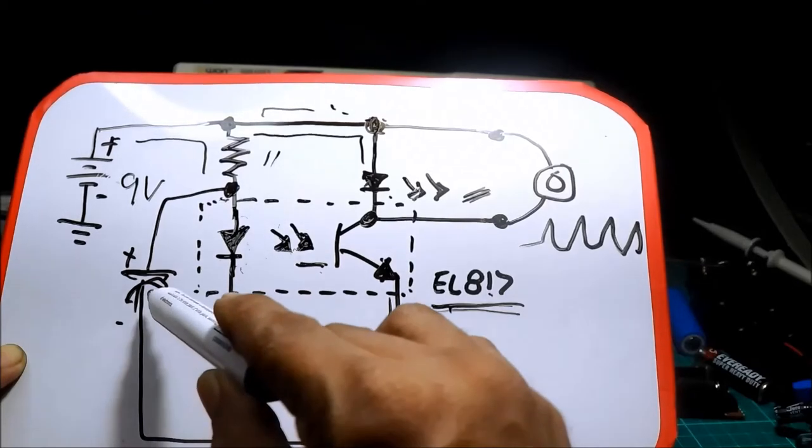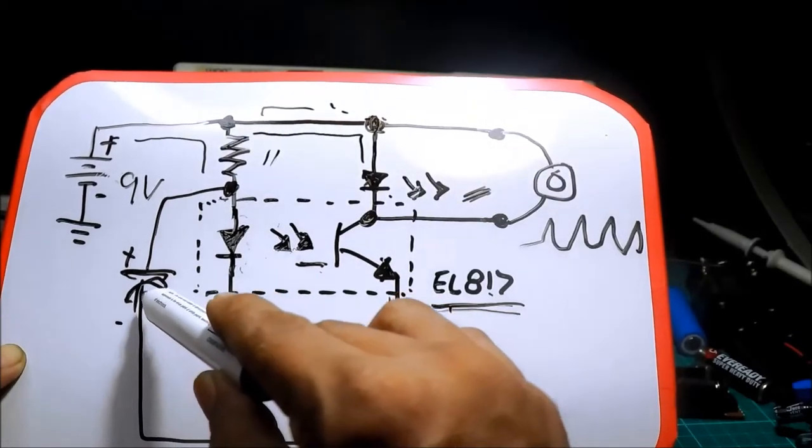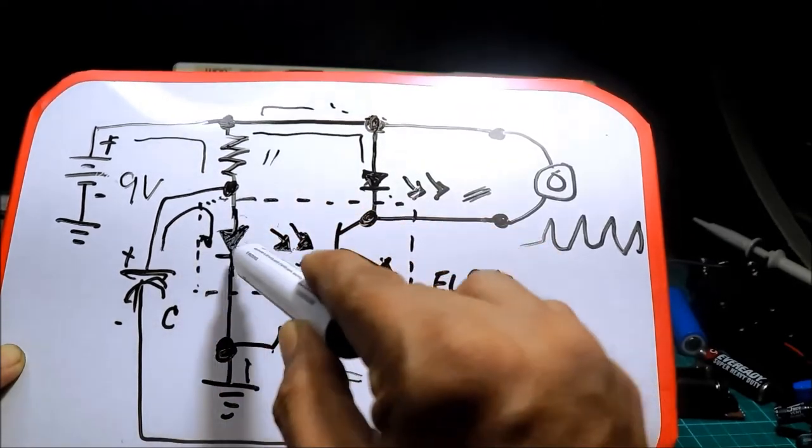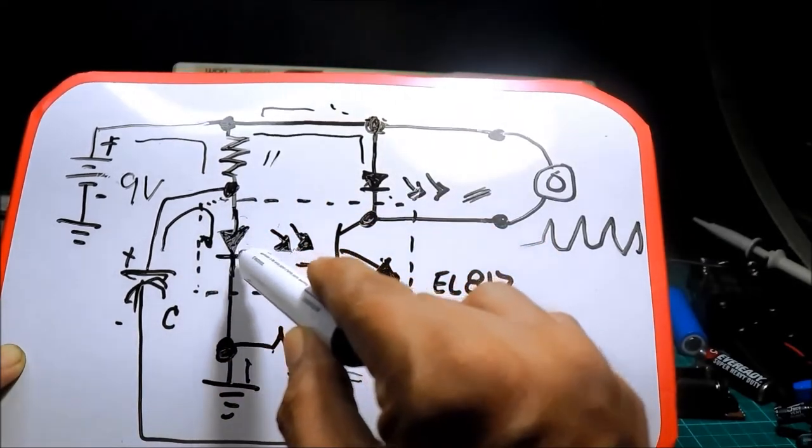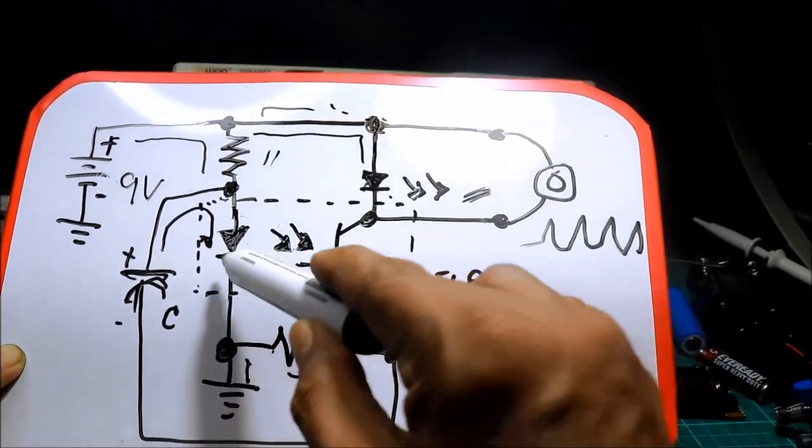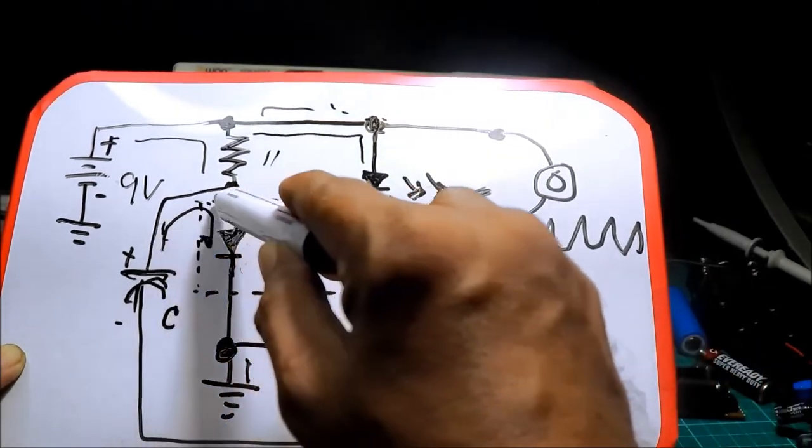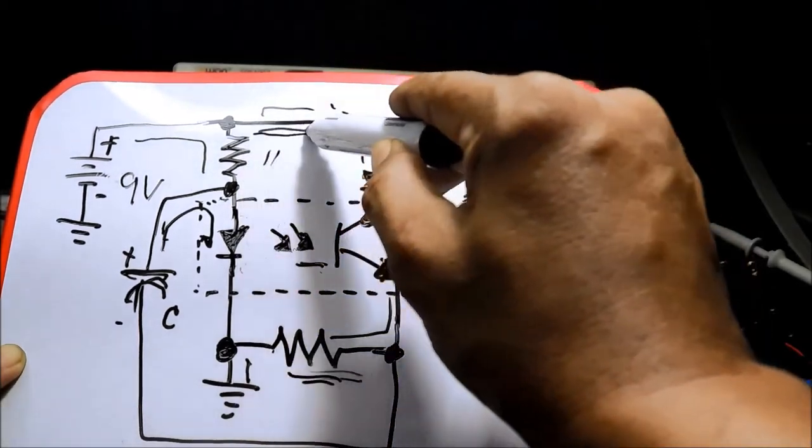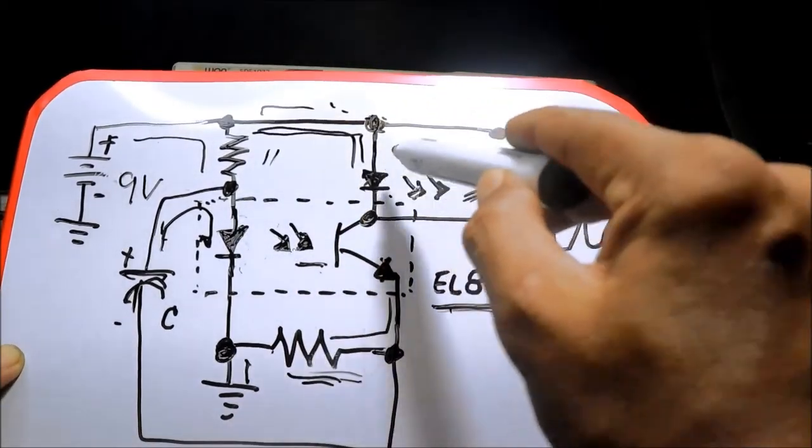Once na nag-charge na siya, magdi-discharge siya through dito sa ating photodiode na nasa loob ng EL817. Pag nag-discharge siya dito, mag-switch on yung transistor. O-on din yung LED. Kaya siya nag-biblink.